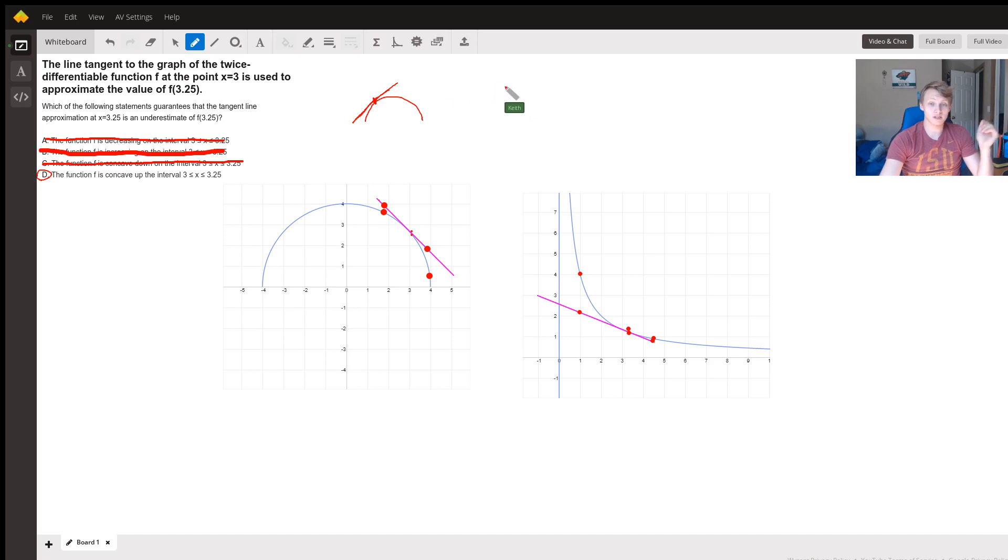So obviously it's going to be an overestimation, but when you have a concave up function, the line will always be under the graph or an underestimate except at the point of estimation. So that's why the function being concave up on the interval guarantees that its tangent line approximation will be an underestimate.